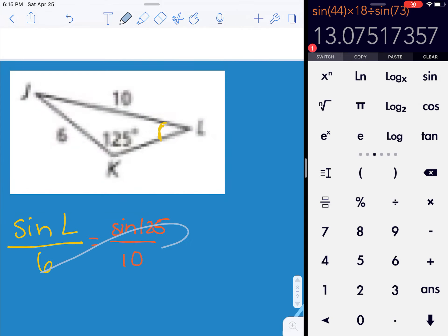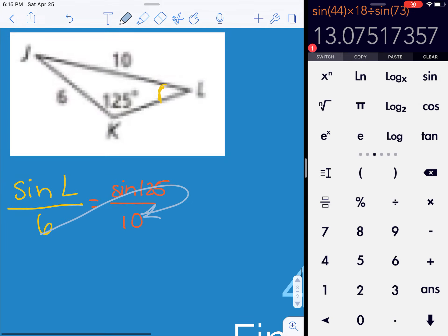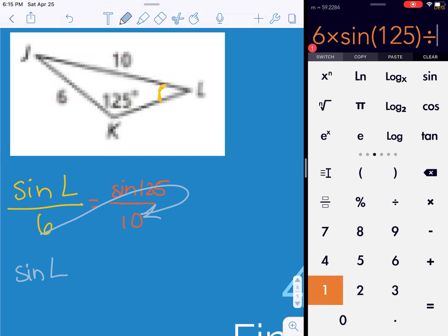I'm going to start by cross multiplying and dividing. I'm going to do 6 times the sine of 125 divided by 10. And on my work, I'm going to write down 4 digits, but I'm going to use the whole thing.